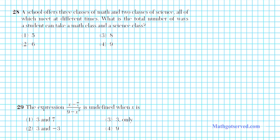Let's take a look at problem 28. It says, the school offers three classes of math and two classes of science, all of which meet at different times. What is the total number of ways a student can take a math class and a science class? We have two classes. The student is taking two classes. So what we're going to do is we're going to make two spots. Let's name the classes. The first class is math. The second class is science.